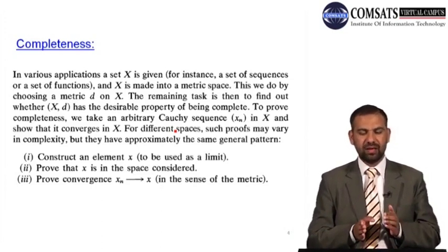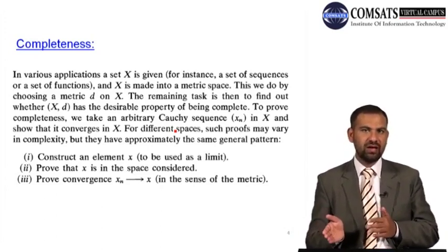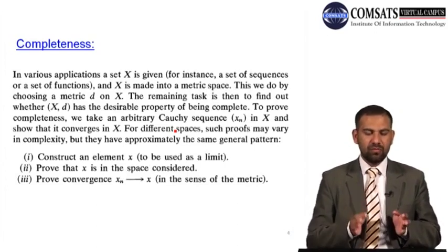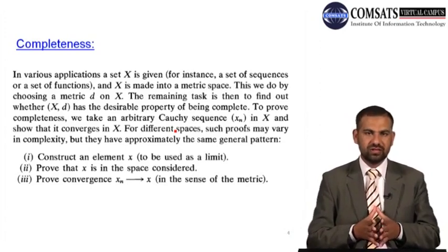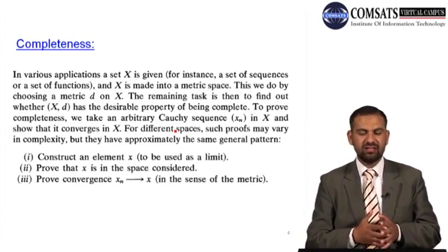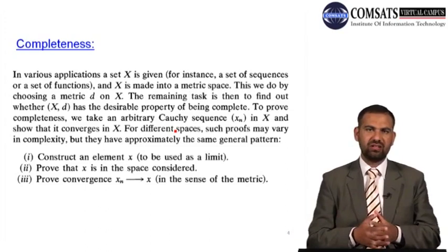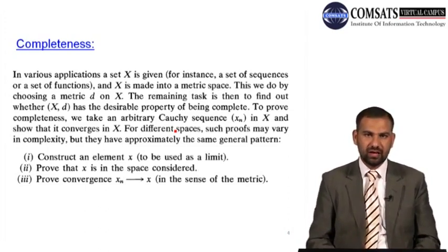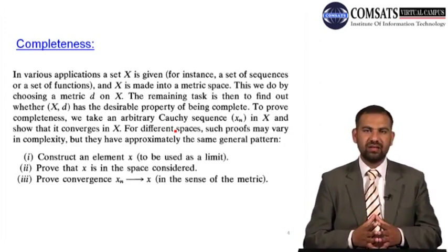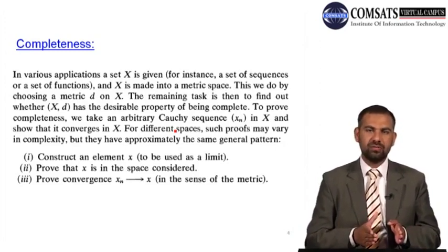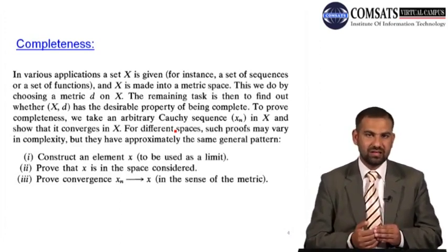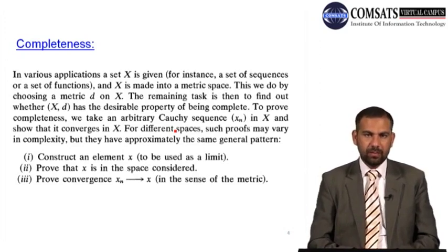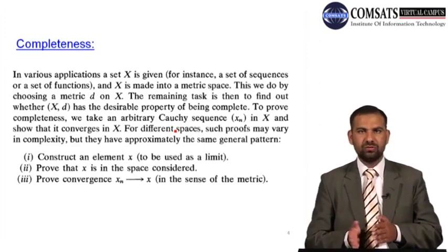The next step is to prove that x is in the space we considered — we need to show that the element x belongs to this space. The third step is to prove convergence: we must show that the Cauchy sequence converges to the point x under the metric defined on the set. In the last class we saw that many different metrics can be defined on one set, for example on the real numbers or natural numbers.